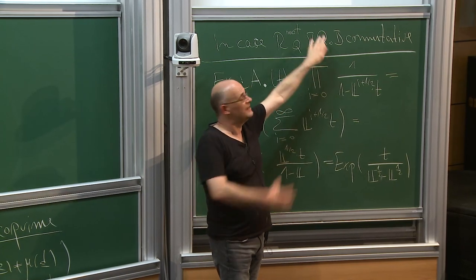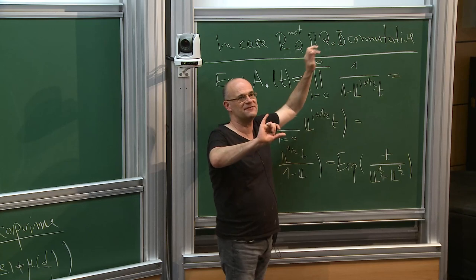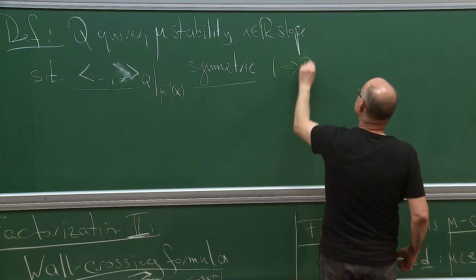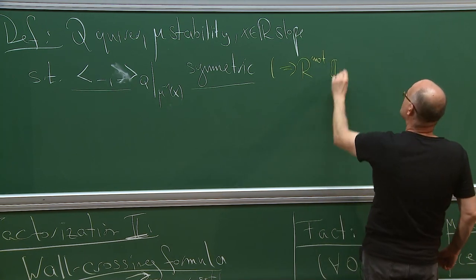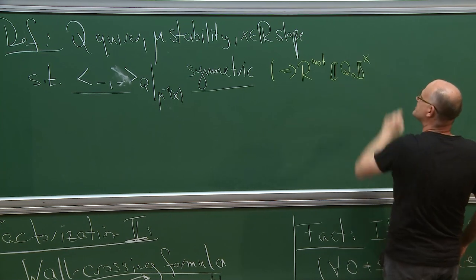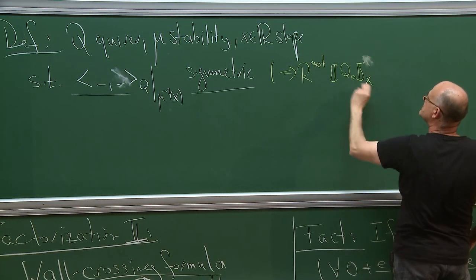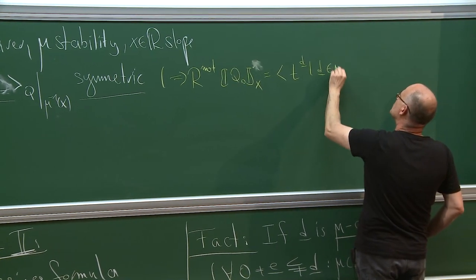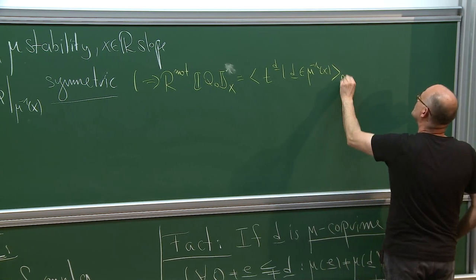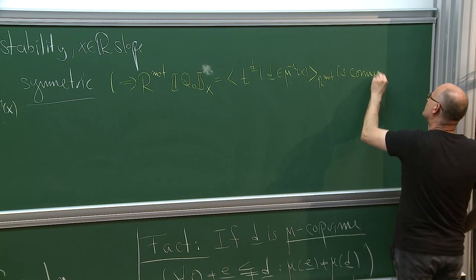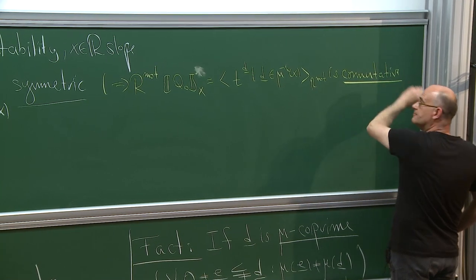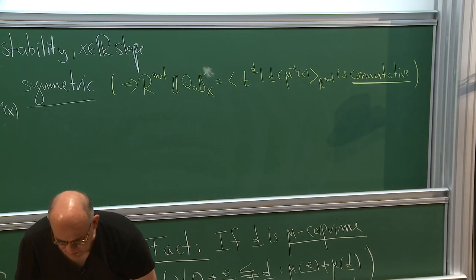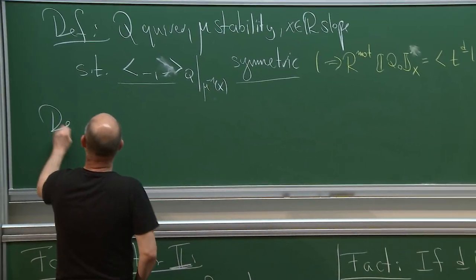This is the important technical assumption: the Euler form restricted to this codimension-one space of dimension vectors of fixed slope should be symmetric. This implies that the part of the motivic ring where we only consider monomials of that slope is commutative, because the twist in this motivic ring was defined using the anti-symmetrized Euler form. So the local part of this formal power series ring is commutative — that's the reason we make this assumption.